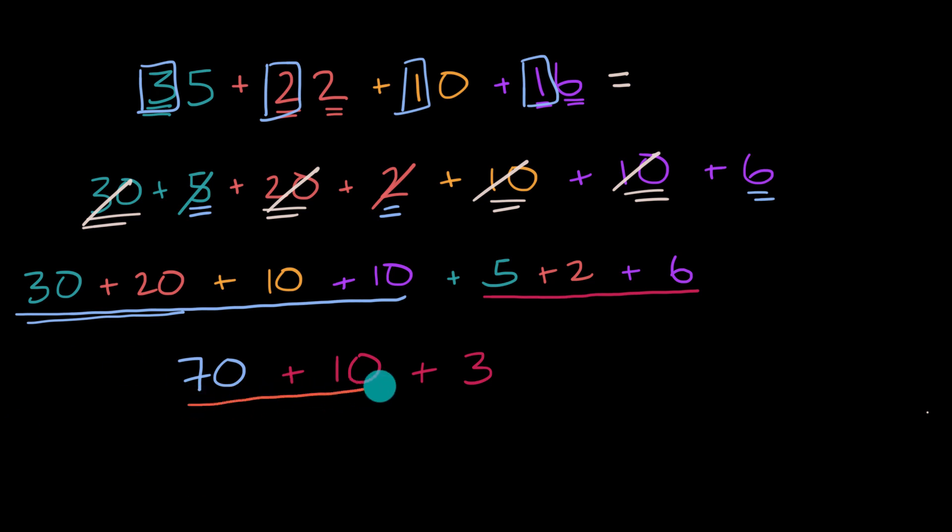We can see that that's the same thing as 70 plus 10, which is 80 plus three, which is the same thing as eight tens and three ones, which is equal to 83. And we're done.